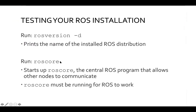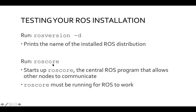Once ROS is installed, you can run 'rosversion -d' to test if it worked — this tells you what distribution is installed. The second important command is 'roscore'. This is the central program that allows all nodes to communicate and needs to be running for ROS to work. Always make sure you have roscore up when running ROS software.